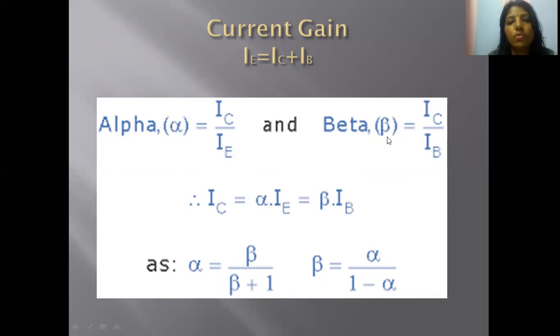Current gain: We can write these relations as IC upon IE equals alpha, and IC upon IB equals beta, and IC plus IB equals IE. Using these three equations, we can relate alpha and beta. Alpha is written in terms of beta as alpha equals beta upon beta plus 1, and beta is written in terms of alpha as beta equals alpha upon 1 minus alpha.